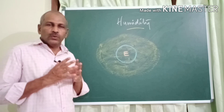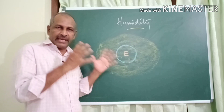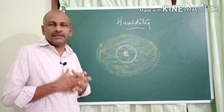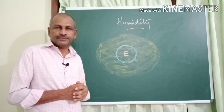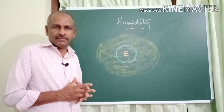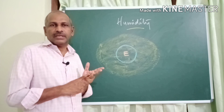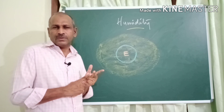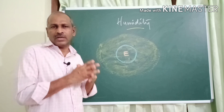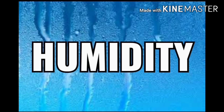One of the peculiar features of the planet Earth is it has atmosphere. The air envelope that surrounds the Earth like a blanket is called atmosphere. The atmosphere does not contain only air or gases — it also has dust particles and water content. The water content or amount of water present in the atmosphere is called humidity.